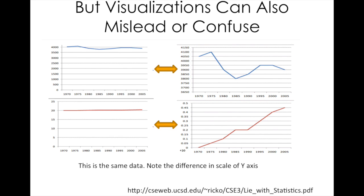But visualizations can also be confusing and misleading, just like statistics. Here we're graphing the same data on both sides, but look at the scale of the y-axis: one goes from 0 to 4,000 and the other from 3,650 to 4,150. There's a big difference when you change the scale. When you have a very large scale on the y-axis, even big changes can look like almost nothing. So your visualizations and how you choose to present them are important in terms of clarity.